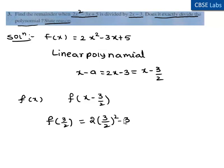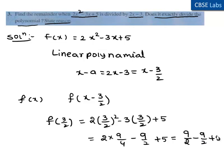This equals 2 times 9/4 - 9/2 + 5, which is equal to 9/2 - 9/2 + 5. The 9/2 terms cancel, which equals 5. Hence the remainder is equal to 5, which is not equal to 0.